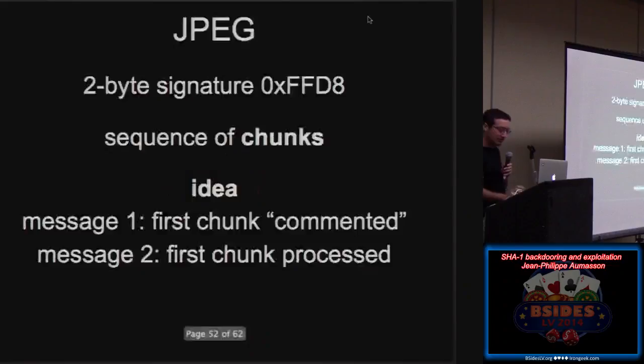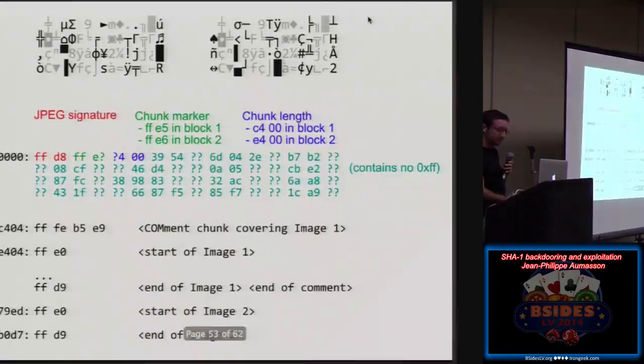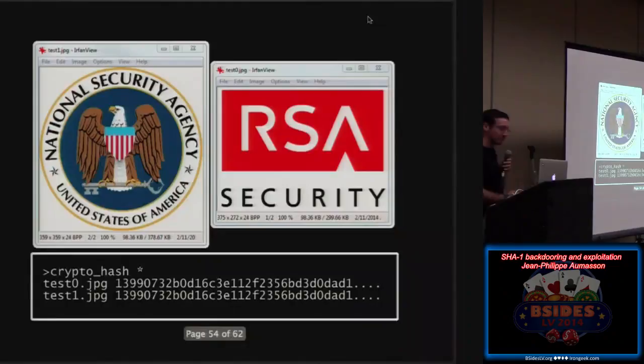JPEG is a bit different because it's not code executed like in the previous example. And there's a two byte signature. So you have a sequence of chunks in the JPEG format. And what we do is that the first chunk will be commented by one of the two files, so it will not be recognized by the image viewer, whilst in the second case it will not be commented and it will be processed. So it will allow you to put two different images in the same file. And again, we can put any images.